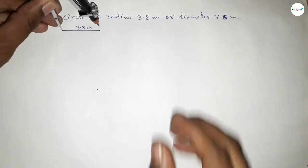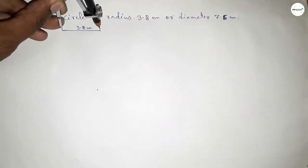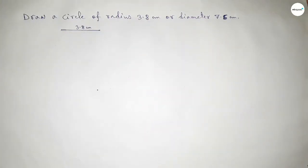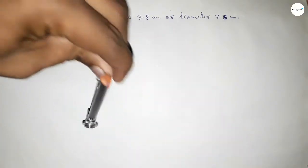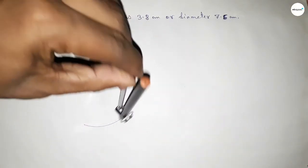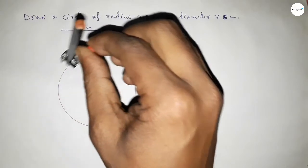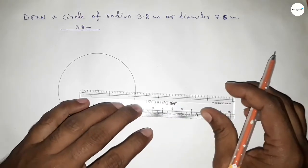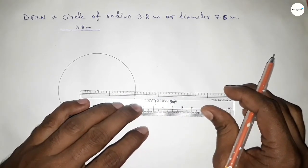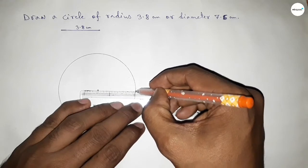Taking the length 3.8 centimeters using a compass, and putting the compass on the point, and drawing an arc this way, which represents a circle of radius 3.8 centimeters.